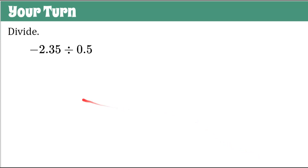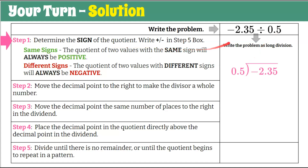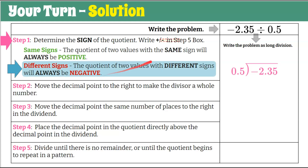Here's another one: divide negative 2.35 by 0.5. Here's our graphic organizer bringing in our problem. Step one: determine the sign. We have a negative and a positive — different signs — so the quotient will be negative. We record that in our answer box.